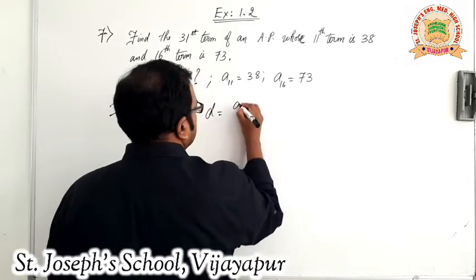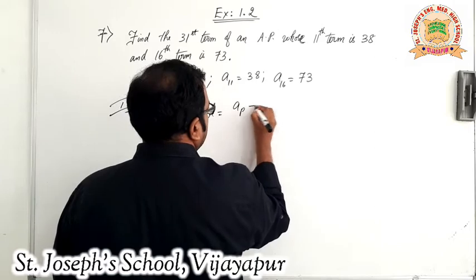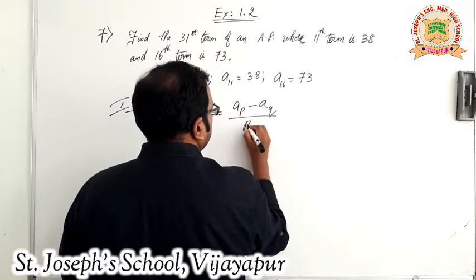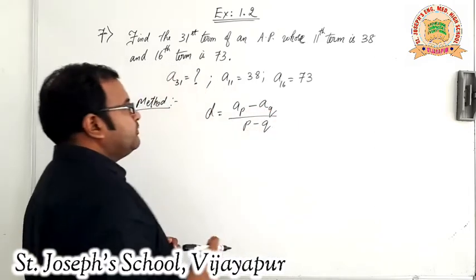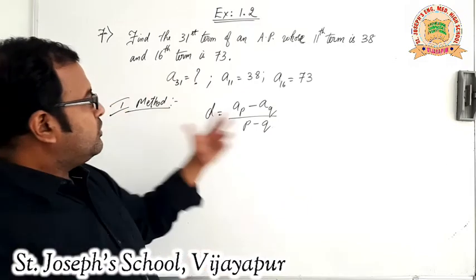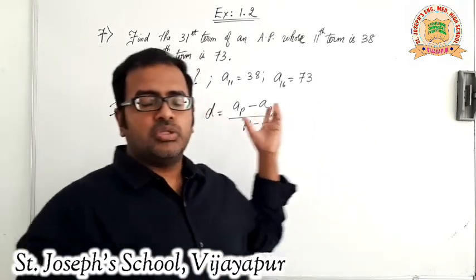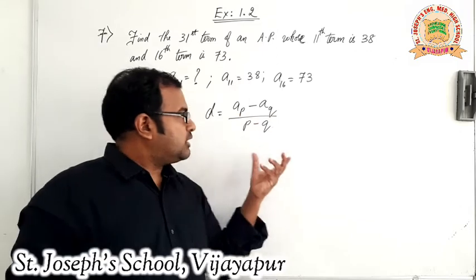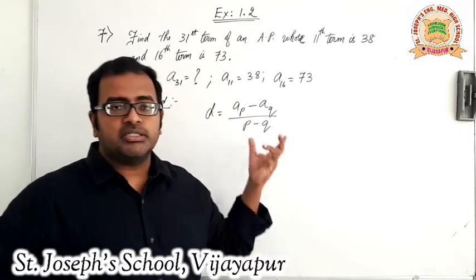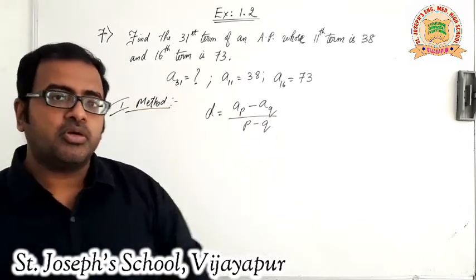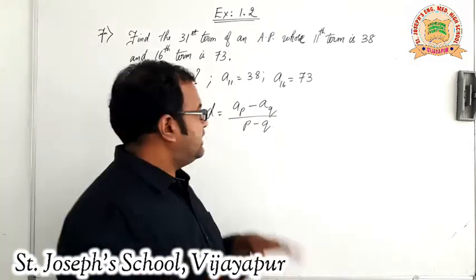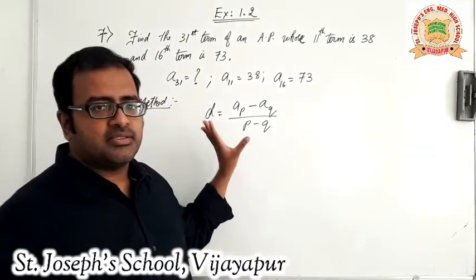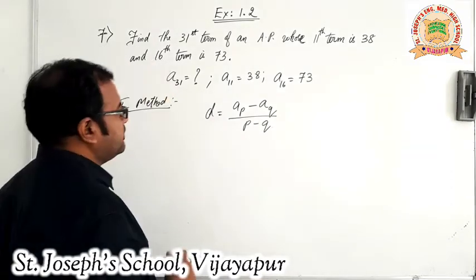D is equal to AP minus AQ upon P minus Q. If you do not understand how this was derived, please write it in the comment section and we will make a separate video about it. For now, we will just accept it like an axiom and use it.